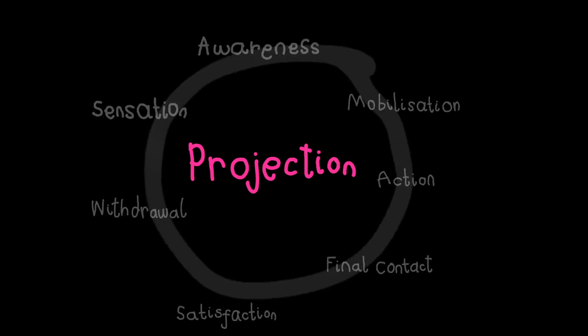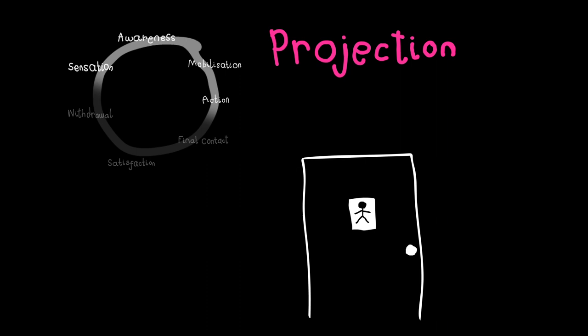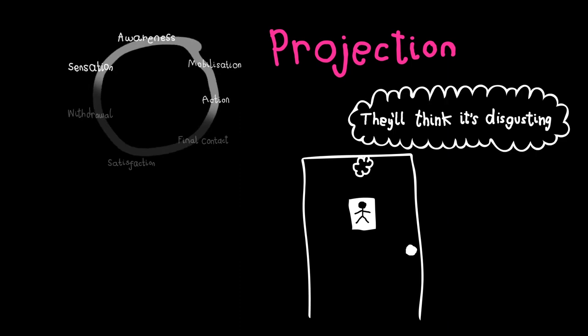Projection is when we project our thoughts onto other people. Essentially, we guess how other people might be thinking or feeling. In our example, this might happen for Bruce just before he gets to final contact. What if they hear me pee, he might think. They'll think it's disgusting. And then he might decide to hold it in until he gets home.